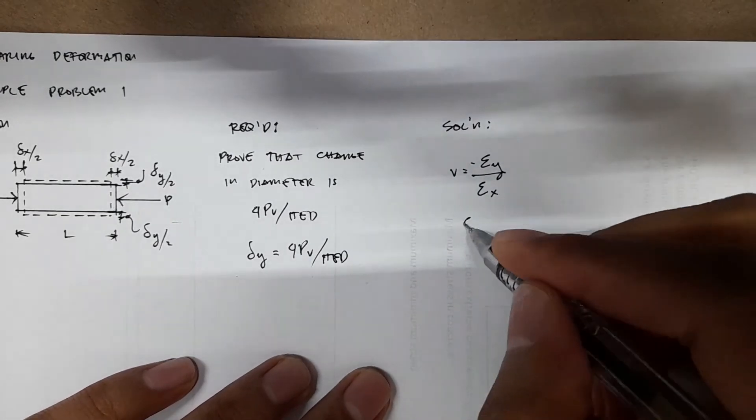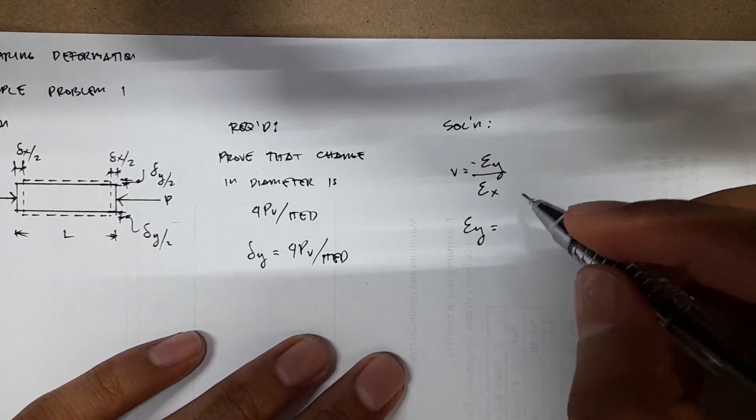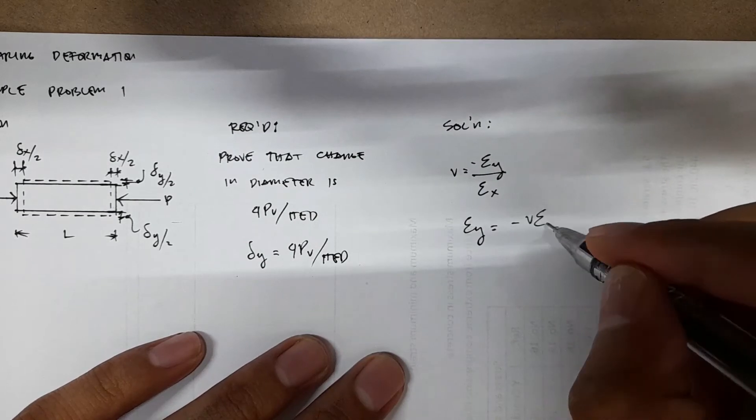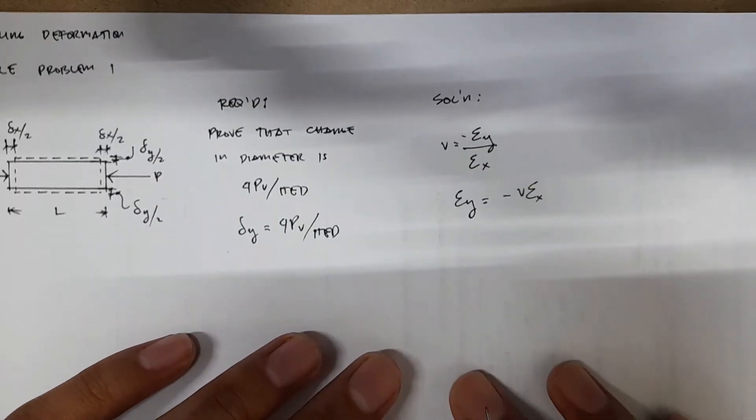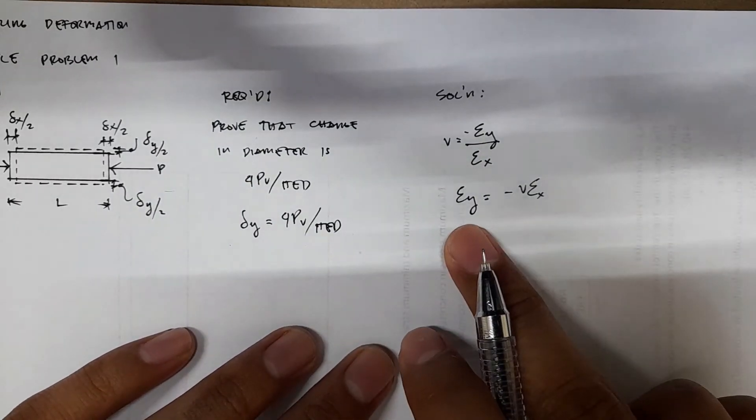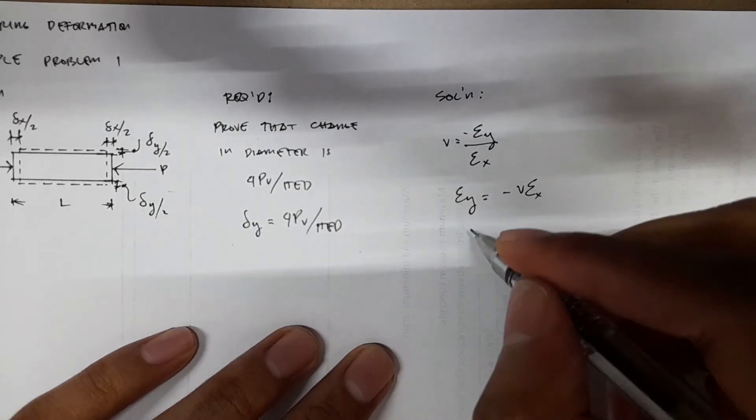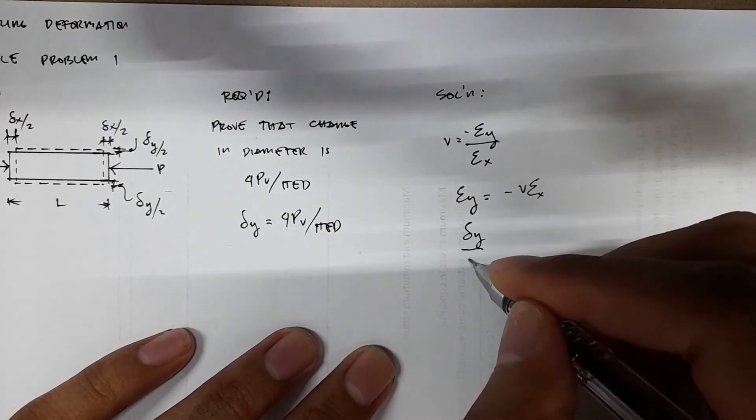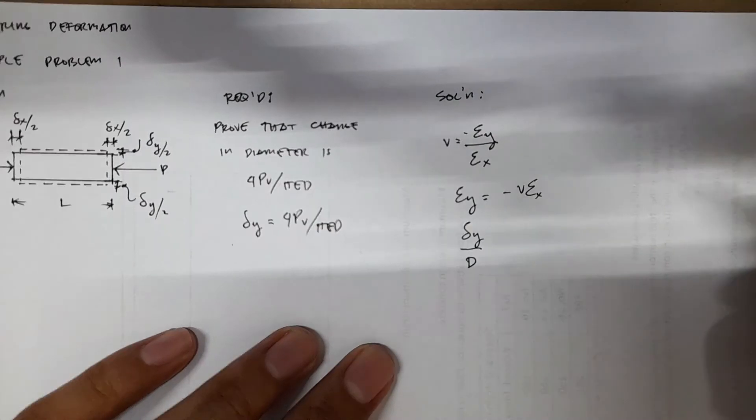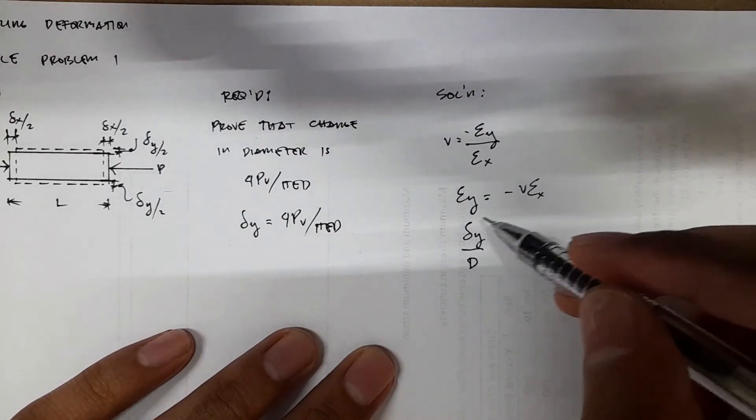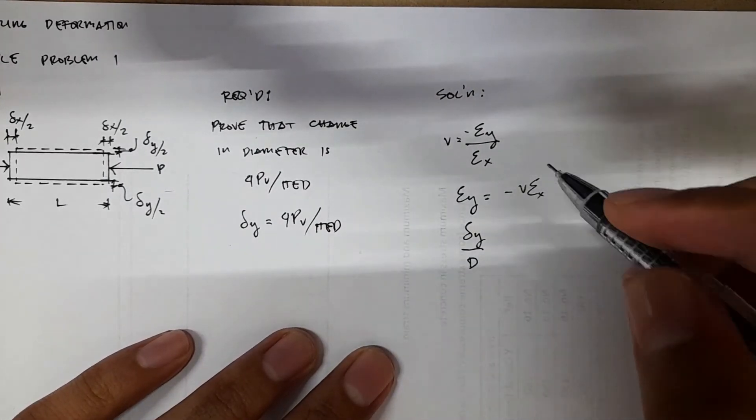So we have εy is just equal to negative V strain x. And then you know that the strain in y is just equal to the deformation in y over the original dimension, which is diameter. It's the change in y over the original y dimension.